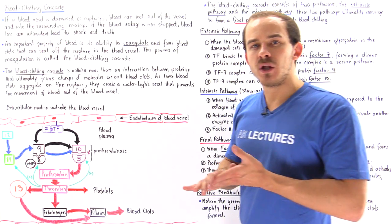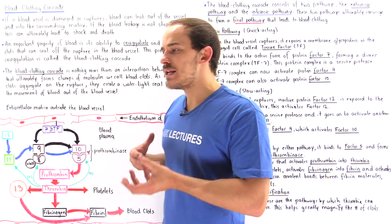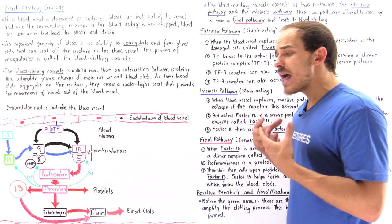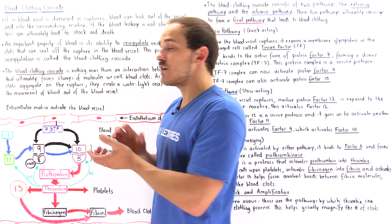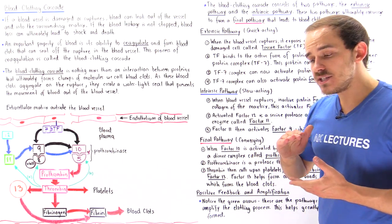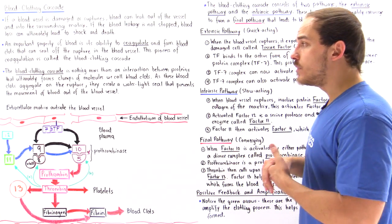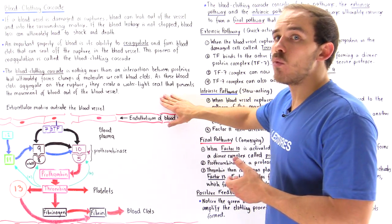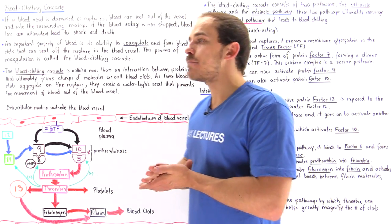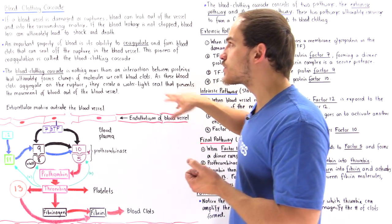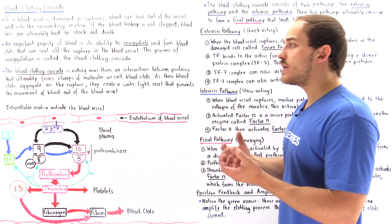What exactly is the blood clotting cascade? It's nothing more than a series of protein and enzyme interactions that ultimately lead to the formation of clumps of molecules we call blood clots. These blood clots attach and aggregate along the rupture on the blood vessel, creating a watertight seal that prevents the movement of blood out of the vessel — ultimately preventing the medical condition we call shock.